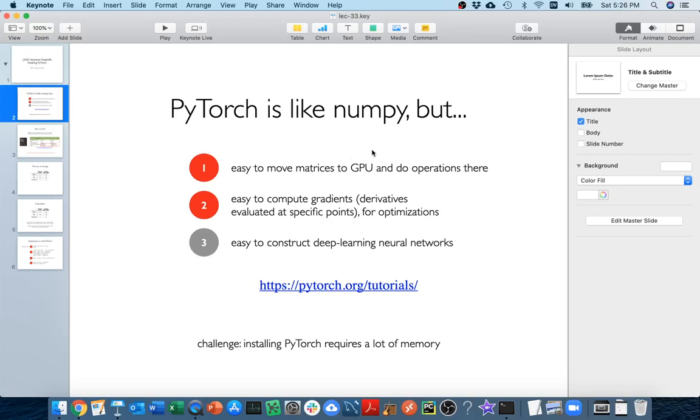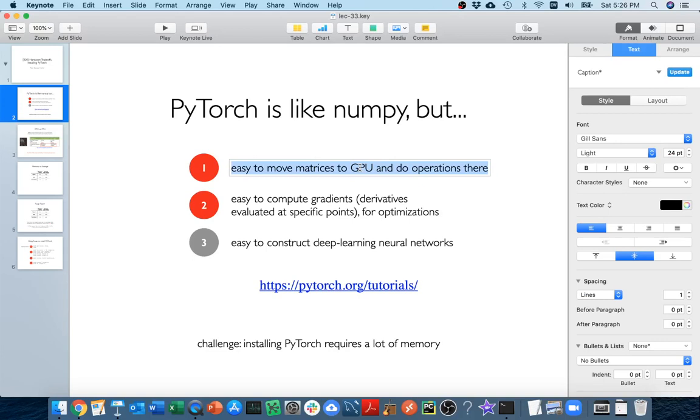Hello. In the previous videos, we looked at how we could use GPUs to speed up computation with PyTorch. But even if you don't have a GPU that's CUDA capable, it might still make sense to be using PyTorch for some other things that it does, in particular computing gradients, which are just derivatives evaluated at a specific point. That's important to a lot of optimizations and machine learning techniques.